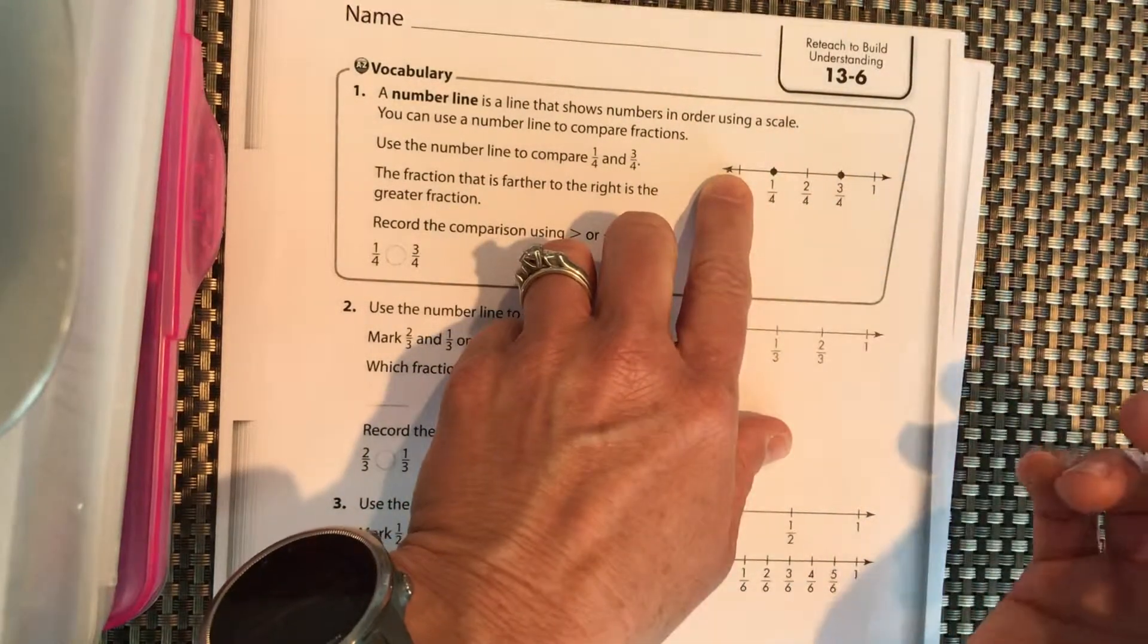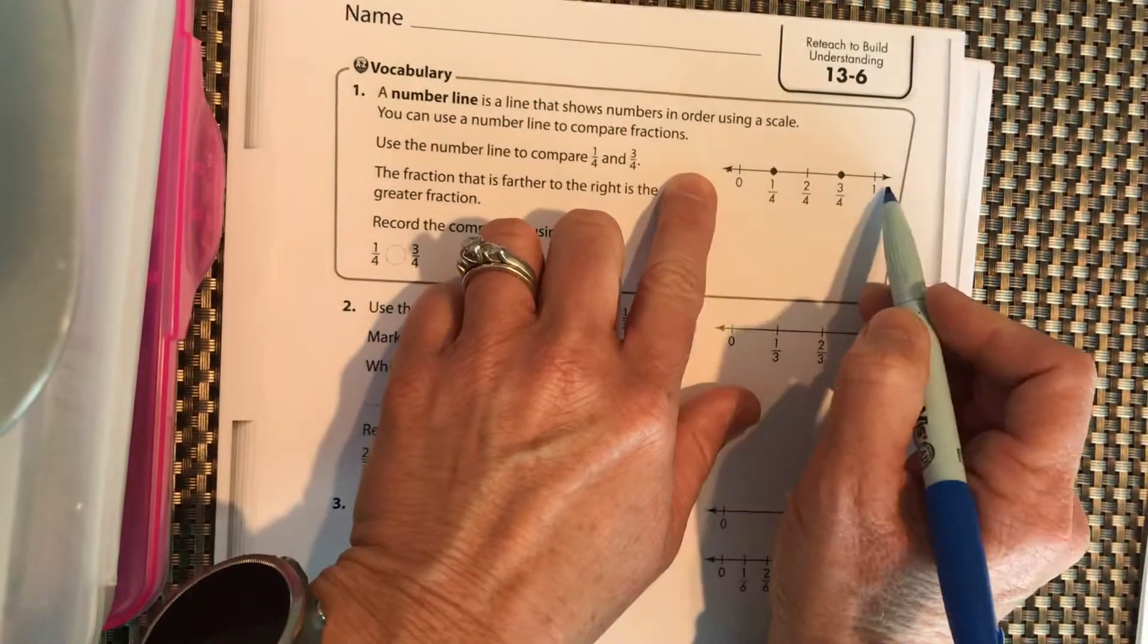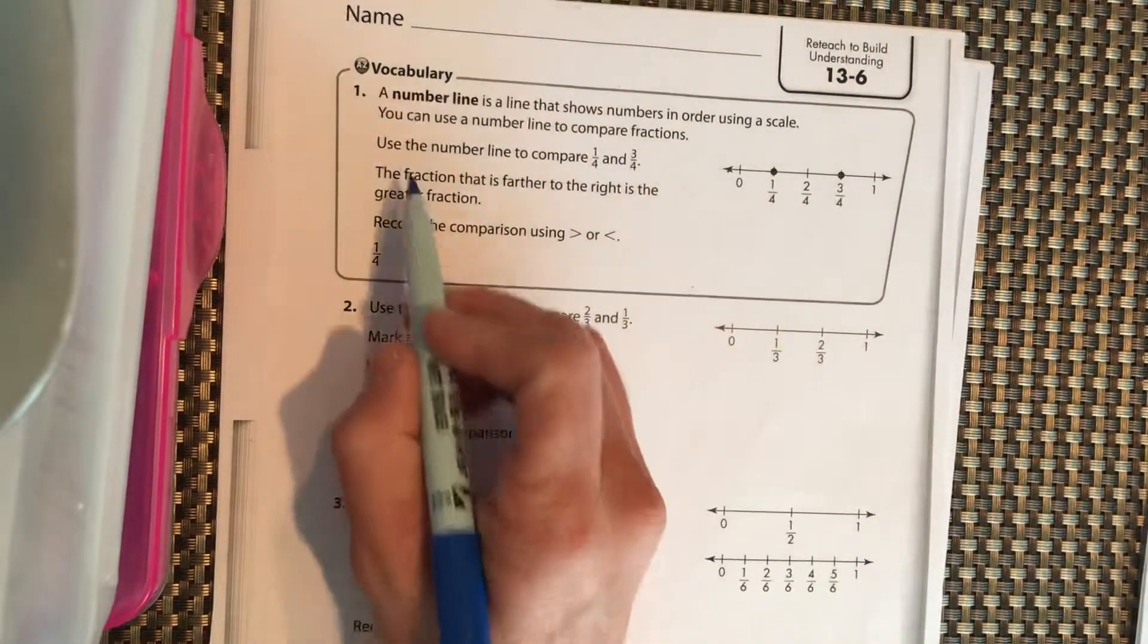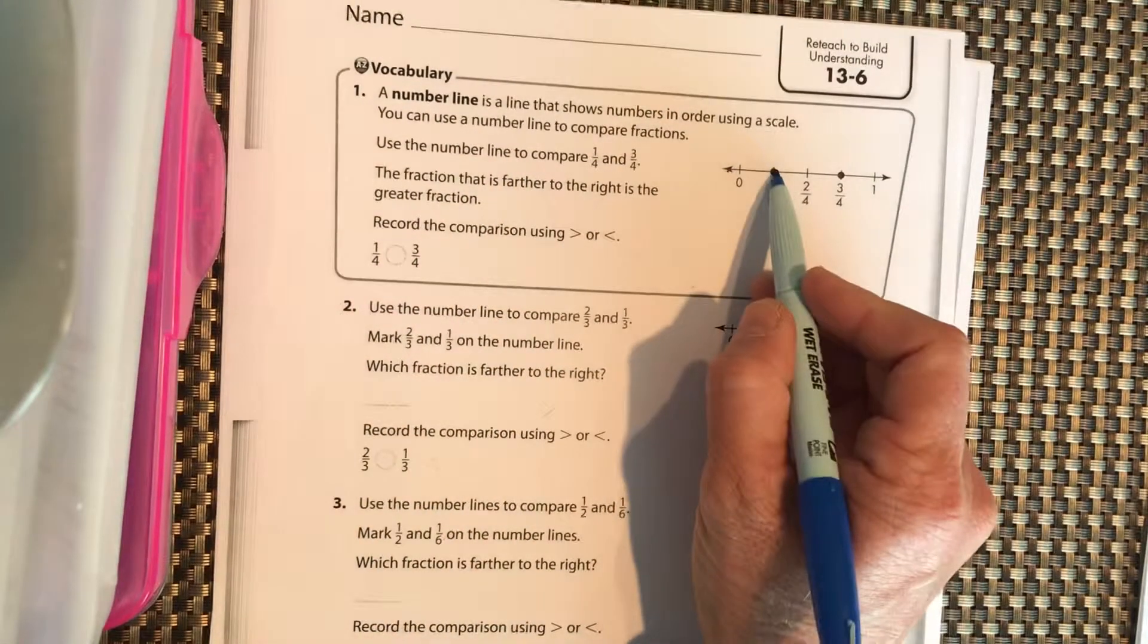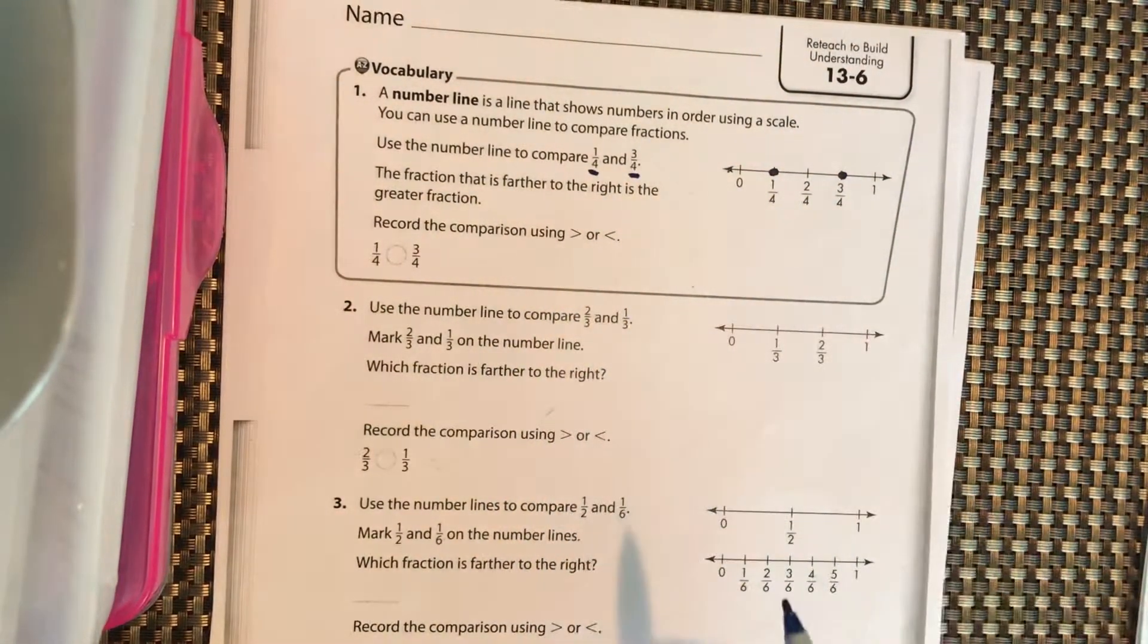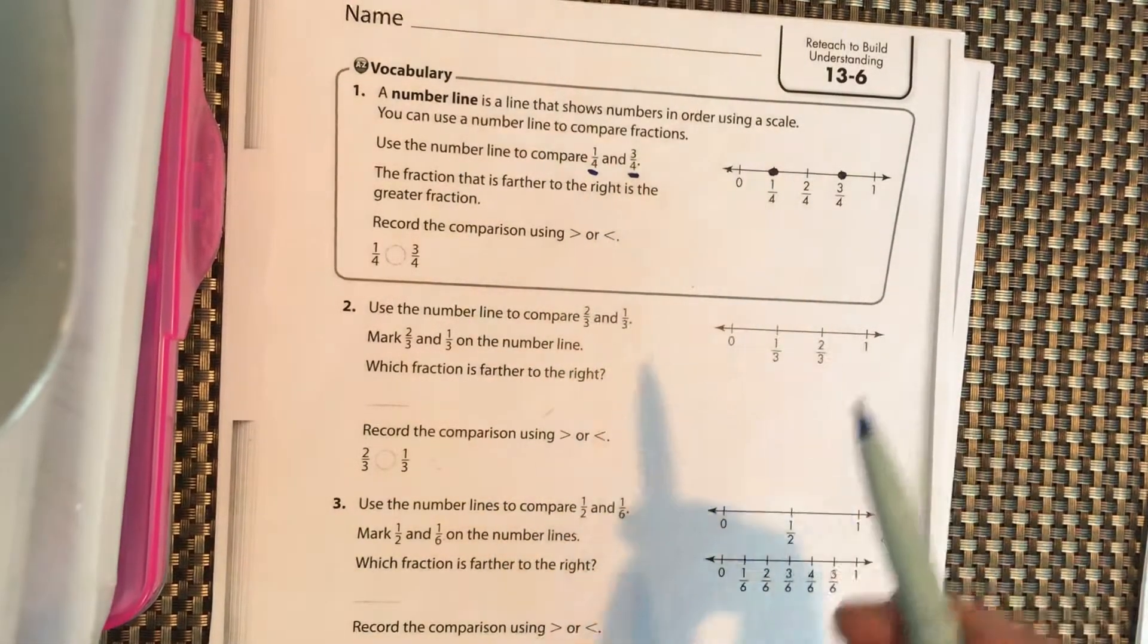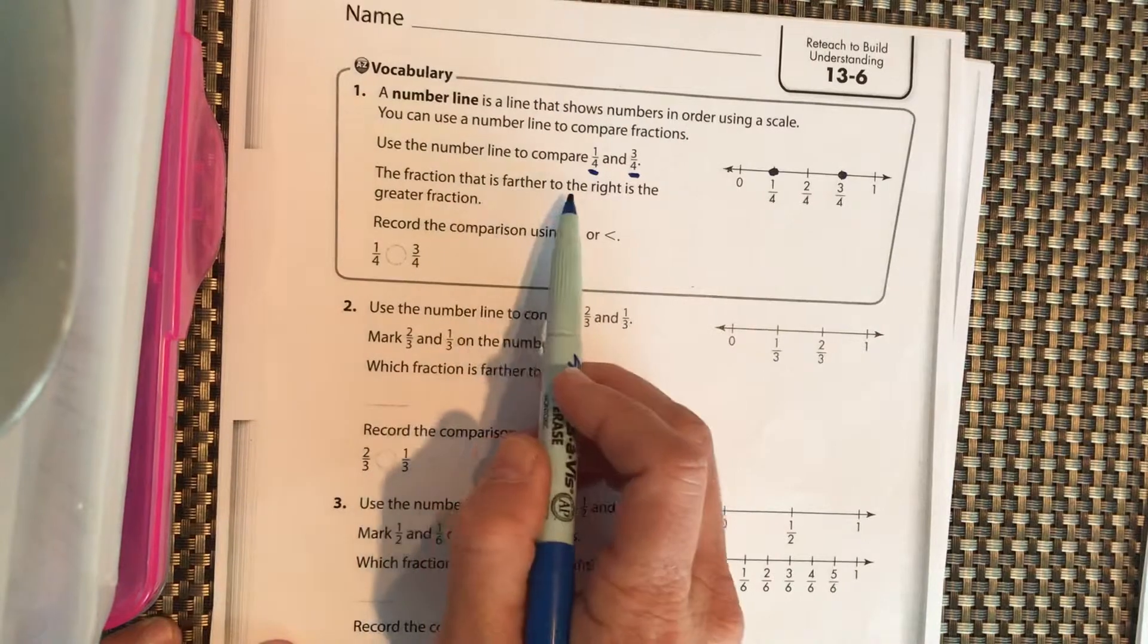That's exactly what a scale is when you get on it, you're measuring your weight. But here we are measuring distance with the number line. So we're going to use the number line to compare 1/4 and 3/4. Now our denominators are the same, which is cause for celebration. We get super excited when our denominators are the same because that means that the pieces we're comparing are the same size.